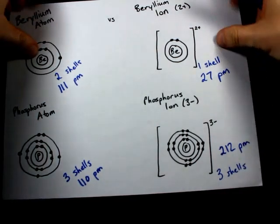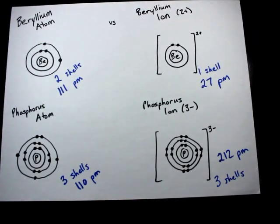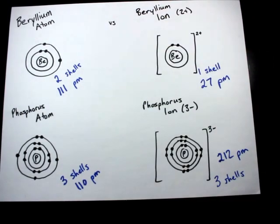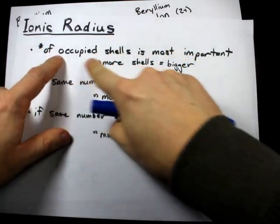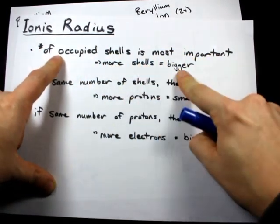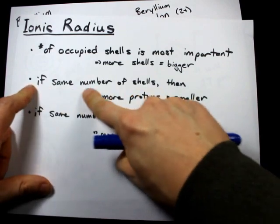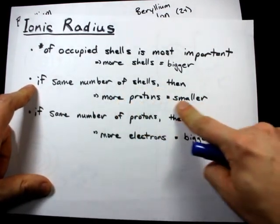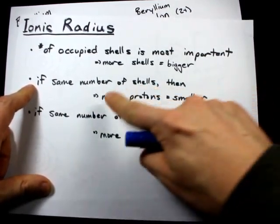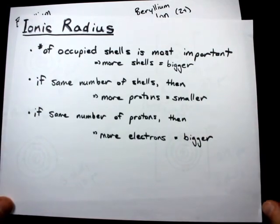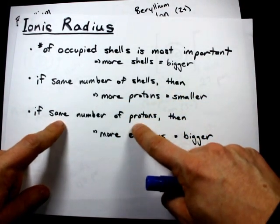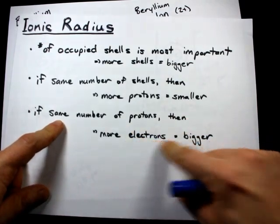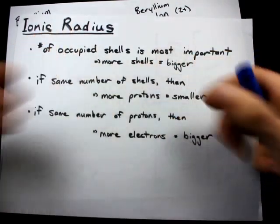Let's just recap that. Ionic size comes down to number of shells occupied. Ionic radius comes down to number of shells. More shells means a bigger ion generally. If you have the same number of shells, it comes down to the number of protons. More protons will give you a smaller ion. And if they happen to be of the same element, same number of protons, then more electrons will give you a bigger ion because of the repulsion between them.